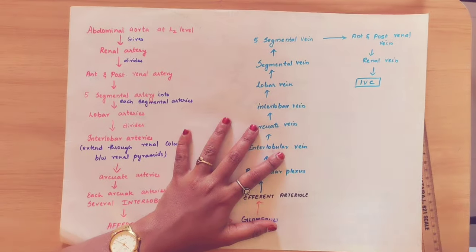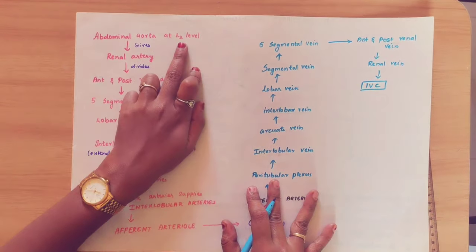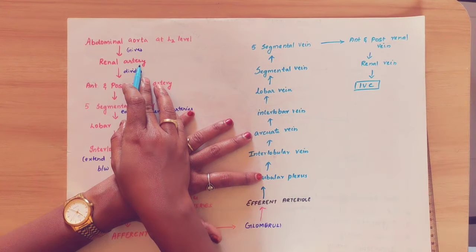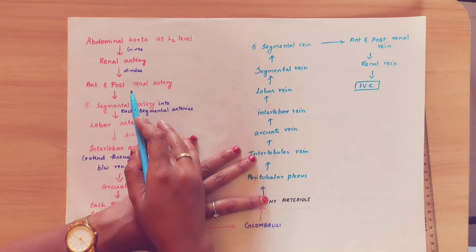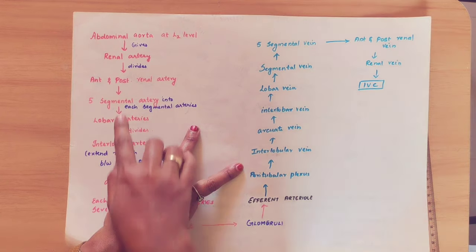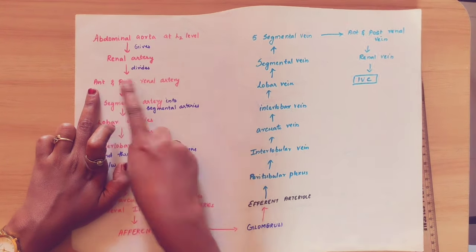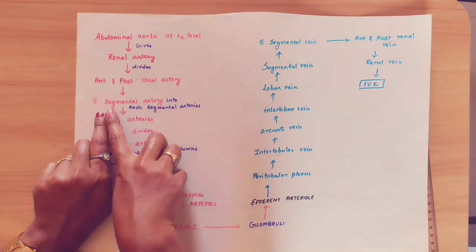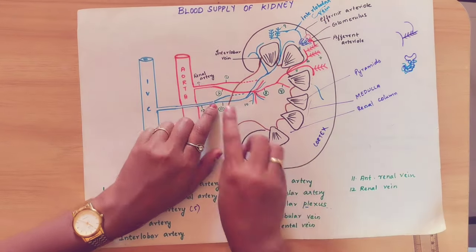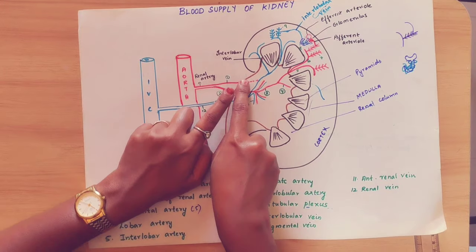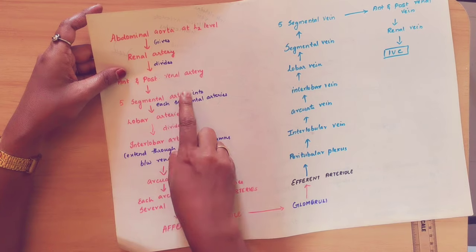Now we will see that in a flow chart. At the L1-L2 level, the abdominal aorta gives a branch called the renal artery. This renal artery divides into the anterior and posterior renal artery. The anterior renal artery gives 4 segmental arteries, and the posterior renal artery gives 1 segmental artery — totalling 5 segmental arteries.